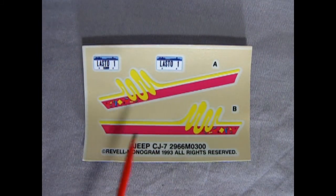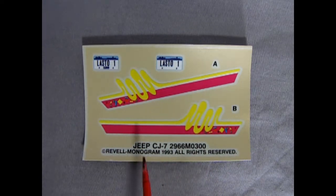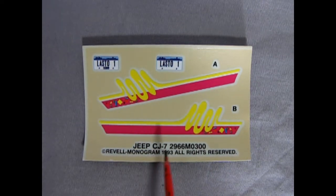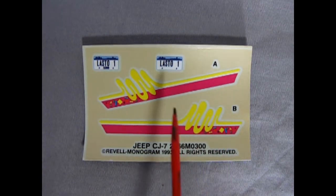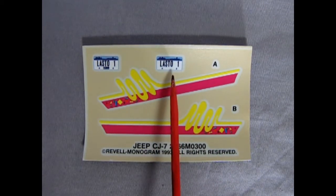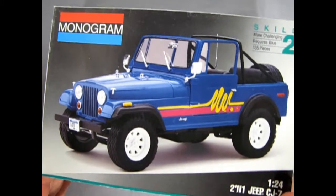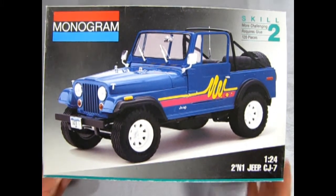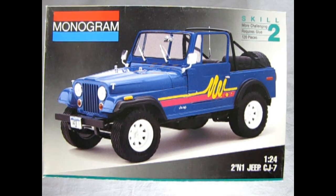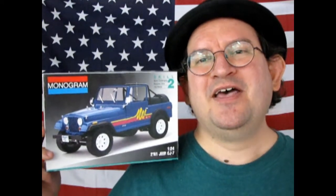You can tell that your model kit came from the 90s when you find graphics in it like this. This is sort of the end of the 80s graphics in the beginning of the 90s. Here we have a license plate that says Lasto 1 so I guess this model was built to Lasto. That completes our look at our 1977 two-in-one Jeep CJ7 by Monogram.